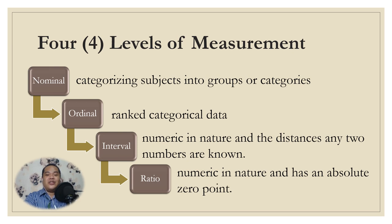Ratio possesses all the properties of nominal, ordinal, and interval data. It is also numeric in nature and has an absolute zero point. Thus, in ratio data we can classify, order, or rank them, and likewise compare their magnitudes. The values at this level allow differences and ratios to be meaningful.